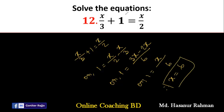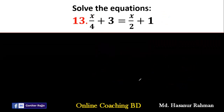We can verify: if we put x equal to 6, then 6 divided by 3 is 2, and 2 plus 1 is 3 on the left-hand side. And 6 divided by 2 is 3 on the right-hand side. So our answer is correct.